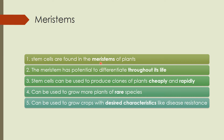Stem cells are found in the meristems of plants — this is kind of like the ends of roots and similar structures. The meristem has the potential to differentiate throughout its life; plants don't lose this ability like we do. Stem cells can be used to produce clones of plants cheaply and rapidly, to grow more plants of rare species, and to grow crops with desired characteristics like disease resistance.